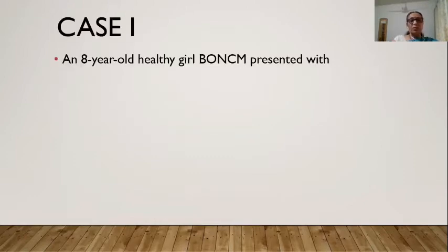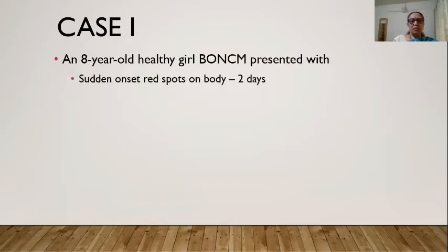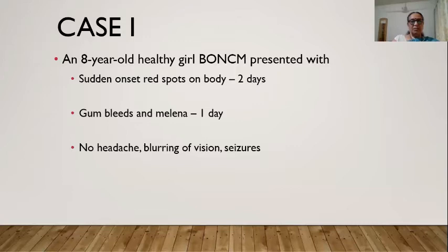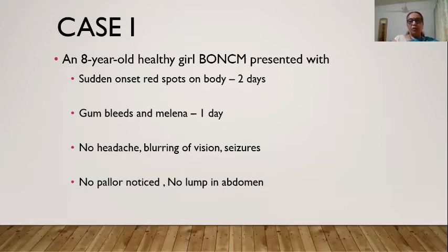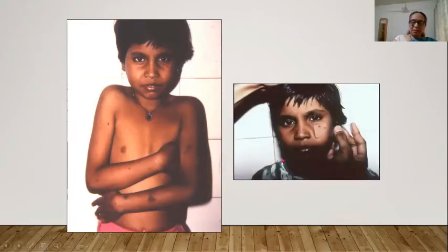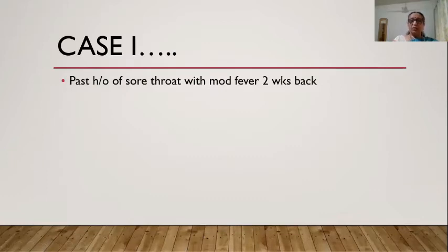Case 1: A healthy 8-year-old girl with sudden onset red spots on the body for two days, gum bleeds and melena for one day. No headache, blurring of vision, or seizures. No pallor, no abdominal lump. She had petechiae and bruises, was otherwise healthy looking with no lymphadenopathy and no hepatosplenomegaly.